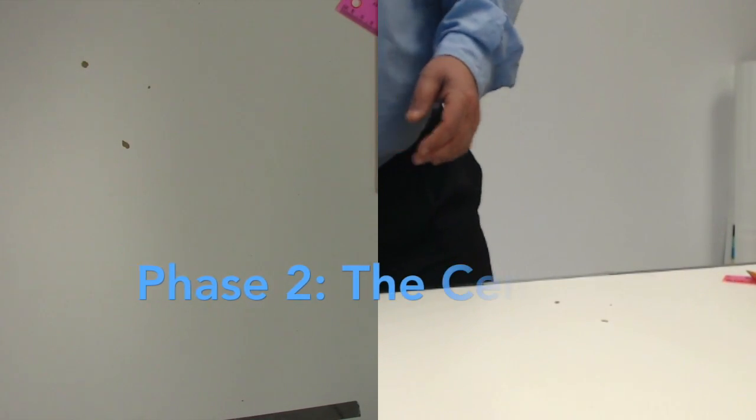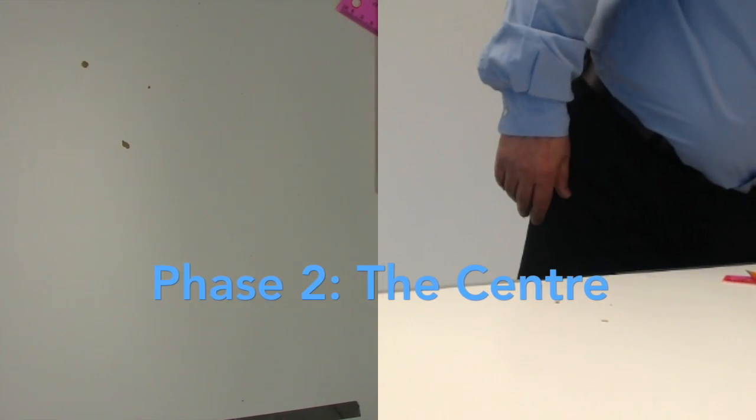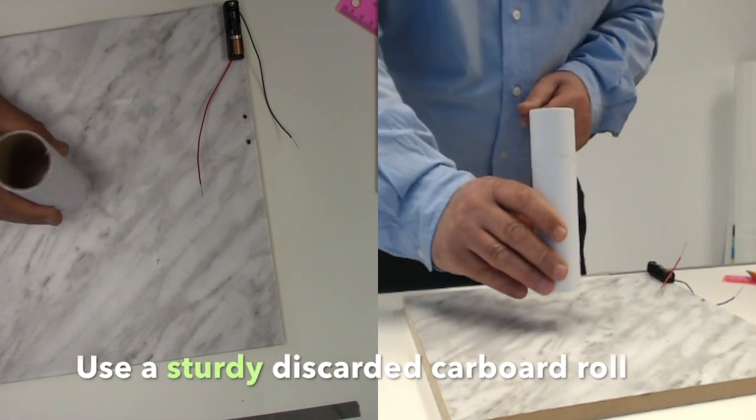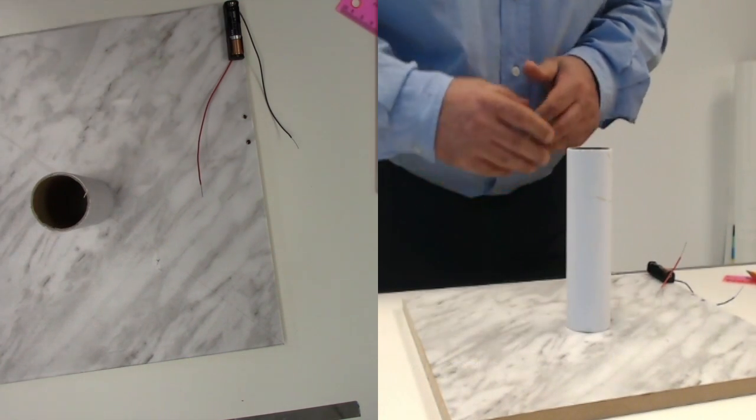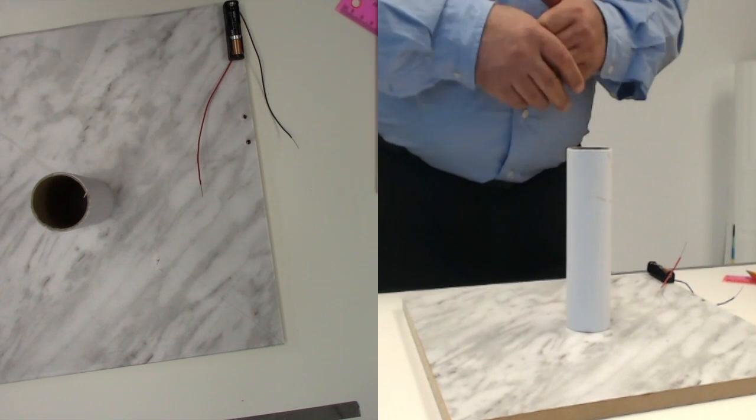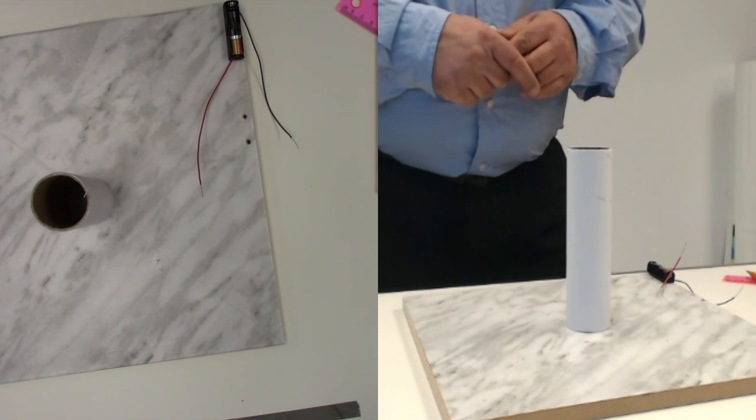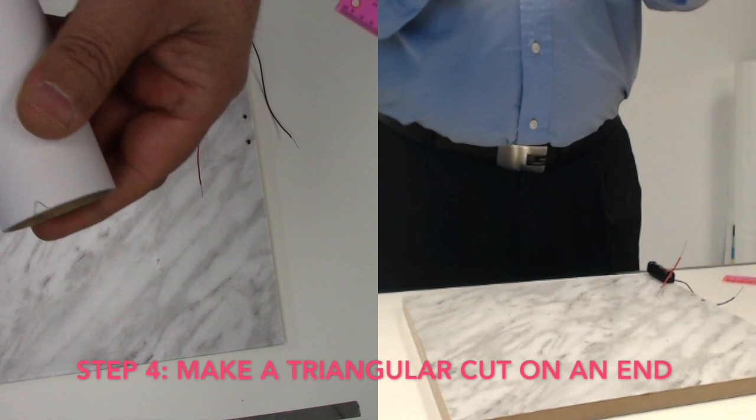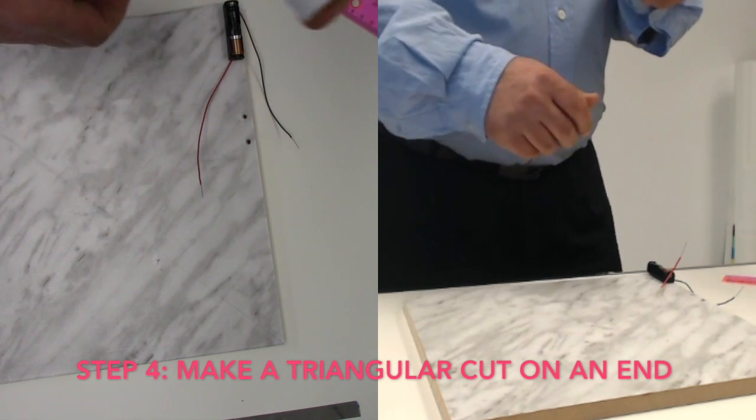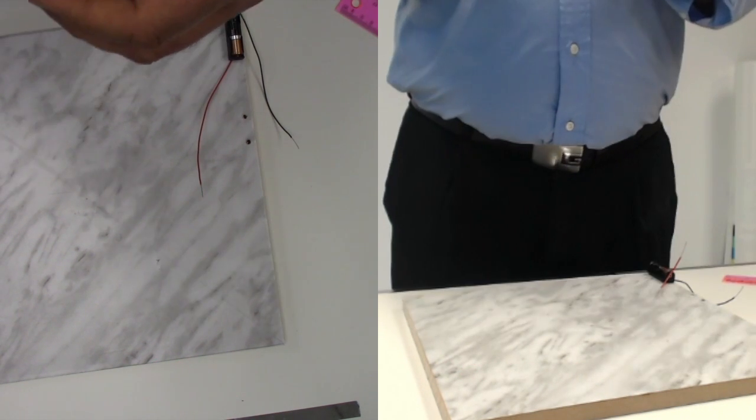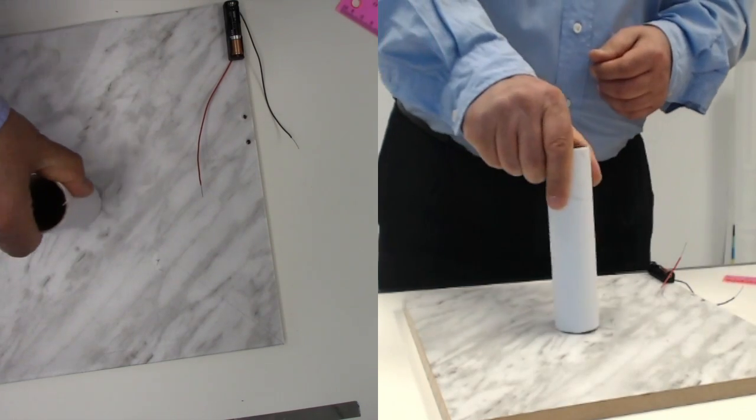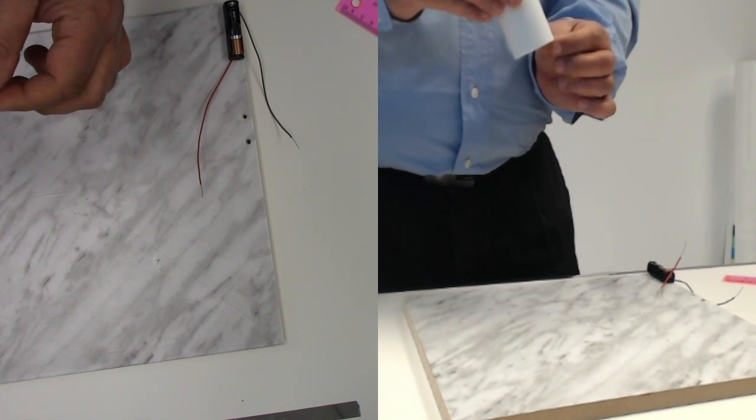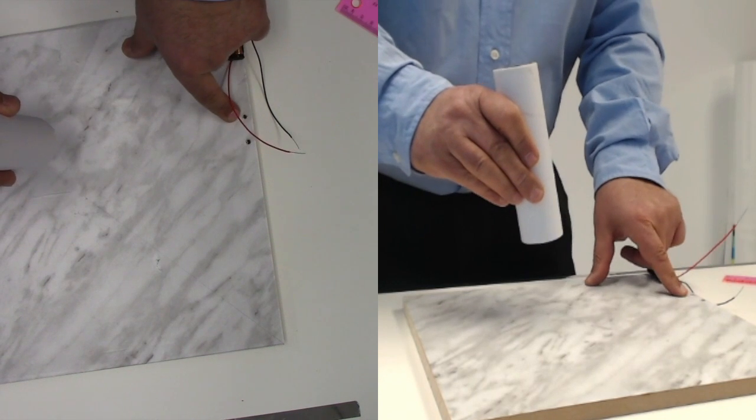The second part of this project consists of the column in the middle. This column or cylinder is going to sit in the center of this board. Now because there are going to be some wires going through this cylinder and coming out, you need to make a little space. I will use an exacto knife to cut it.